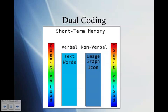One is through our verbal memory channel, which takes in words and text, and a nonverbal memory channel, which takes in things like images, graphs, icons, and these are all taken in through our short-term memory, or what's called our working memory.